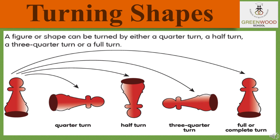Next topic is turning shapes. A figure or shape can be turned by either a quarter turn, a half turn, a three-quarter turn, or a full turn. As you can see in the figure, the object is first turned to quarter, that means it leans on the right side. For the half turn, the quarter turn is furthermore rotated, so the image becomes the reverse of the original. For three-quarter turn, it is furthermore rotated to the left side. And for the full turn, it becomes as the original one.